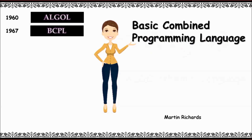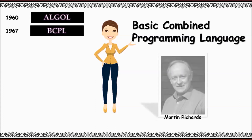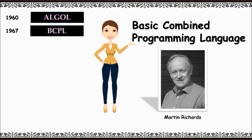Next, in the year 1967, Martin Richards developed a language called BCPL — Basic Combined Programming Language. Primarily, BCPL was developed for system software.